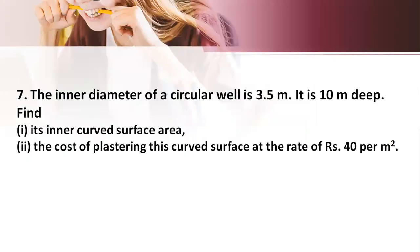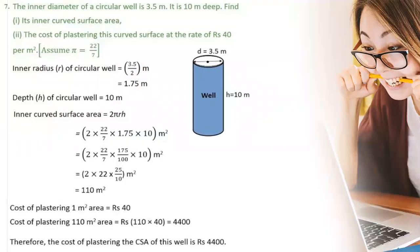Now let us see the seventh problem. The inner diameter of a circular well is 3.5 meters. It is 10 meters deep. We need to find its inner curved surface area and the cost of plastering this curved surface at a rate of rupees 40 per meter square. So curved surface area = 2πrh. Now let us calculate the radius r = diameter/2 = 3.5/2 = 1.75 meters. And height is 10 meters. So the curved surface area = 2 × (22/7) × 1.75 × 10 = 110 meters square.